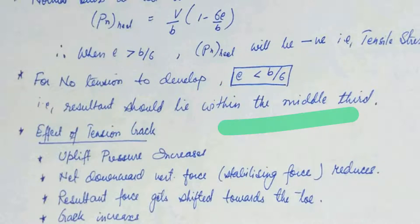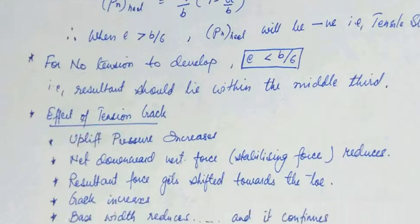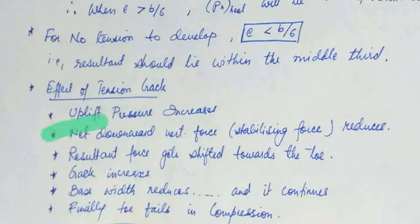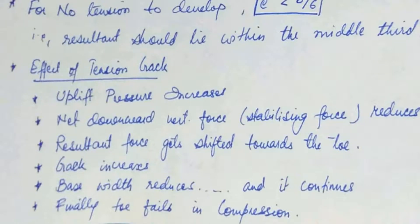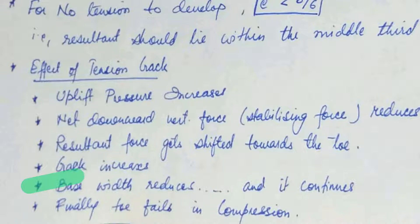Now let us see the effect of tension cracks. Because of tension cracks, the uplift pressure increases so that the net downward vertical force, the earth is actually called the stabilizing force, reduces. The resultant force gets shifted more towards the toe and so the crack increases. And the resulting in reduction in the base width. And the process actually continues. And finally, this leads to failure of your gravity dam in compression.